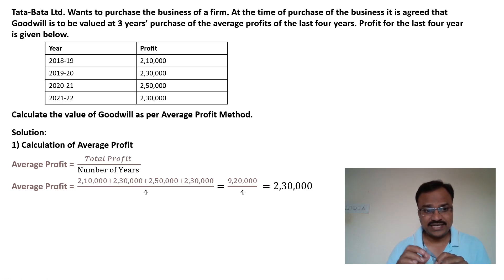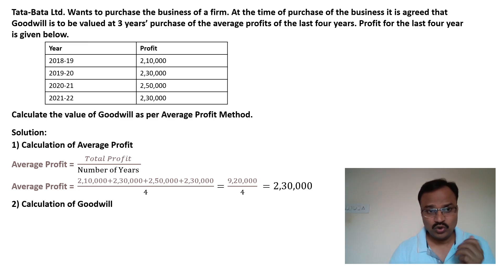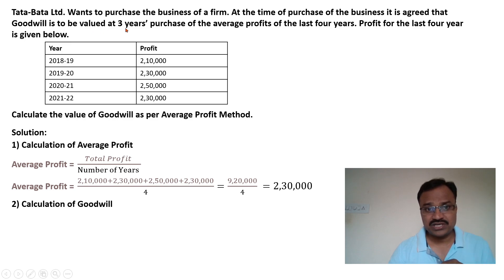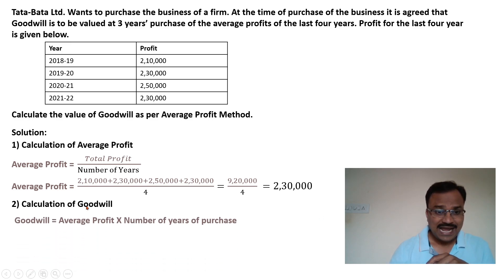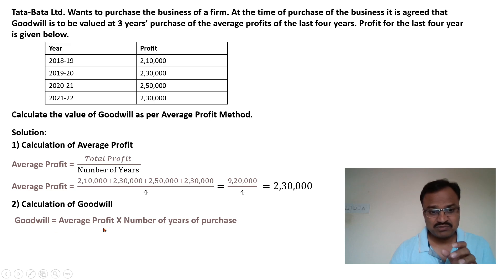In the first step we calculated the average profit as 2,30,000. In the second step we calculate the amount of goodwill. It is given that goodwill is to be valued at three years purchase of average profits. The formula is: goodwill = average profit multiplied by number of years of purchase.